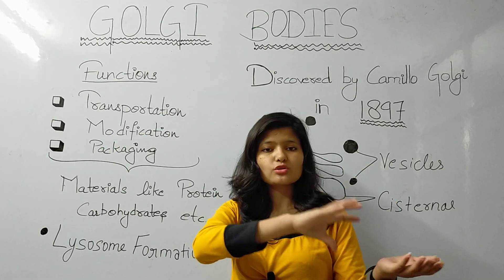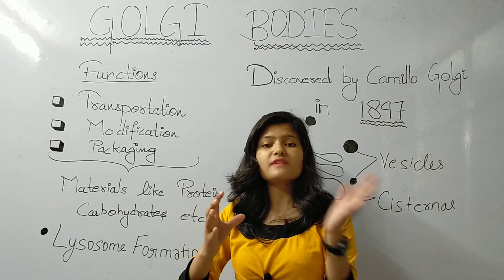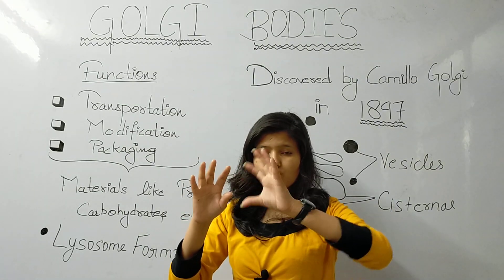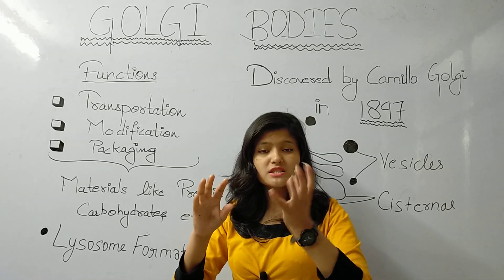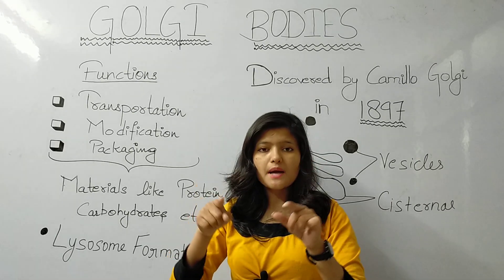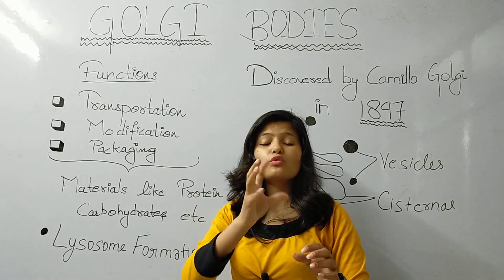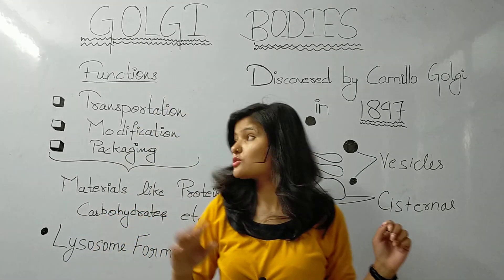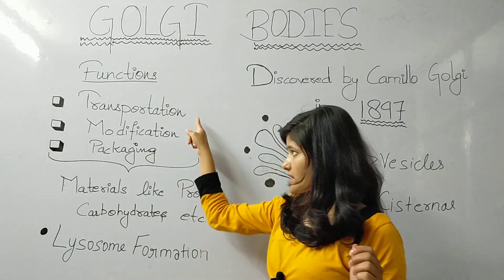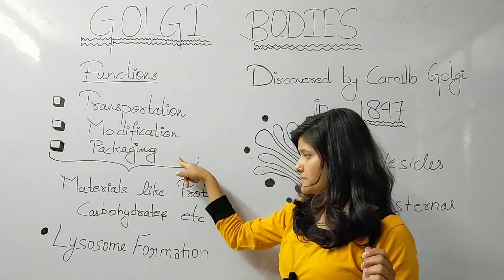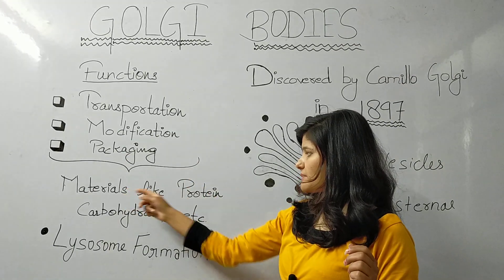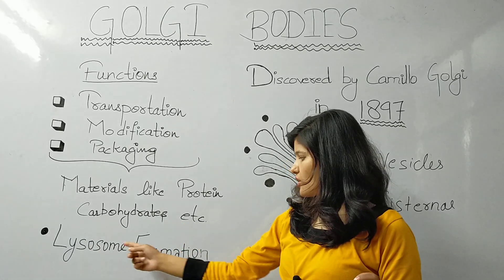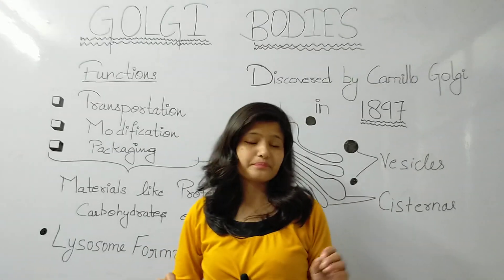The content from the endoplasmic reticulum is not complete on its own. The Golgi apparatus finalizes the enzymes and membrane properties, packaging them properly. So the functions of the Golgi body are: transportation, modification, packaging, and the formation of lysosomes from materialized proteins, carbohydrates, lipids, etc.